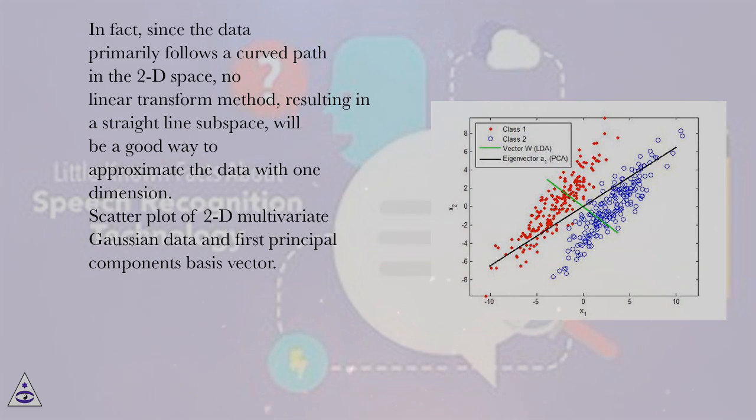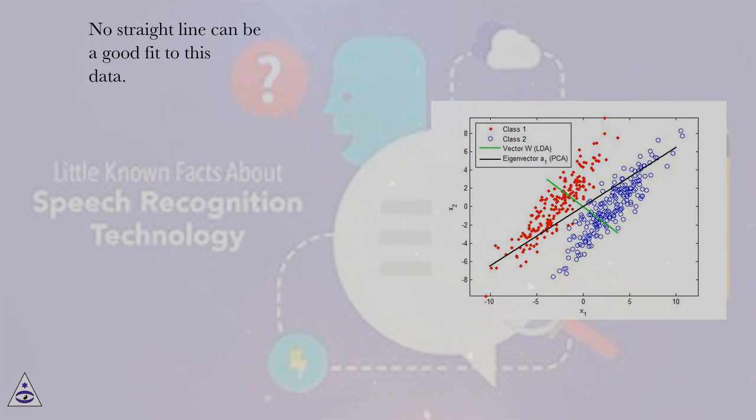Scatterplot of 2D multivariate Gaussian data and first principal components basis vector. No straight line can be a good fit to this data.